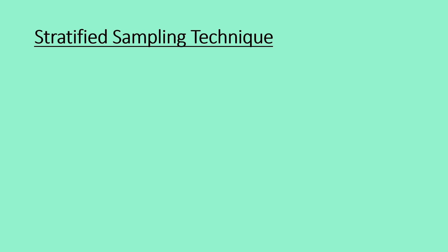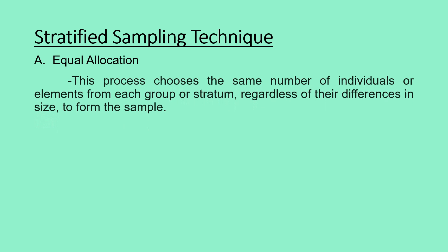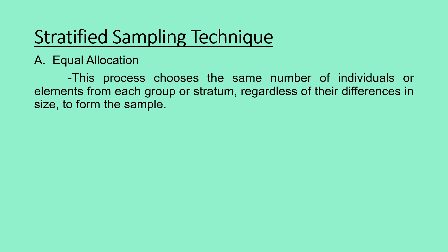Let us now proceed with the detailed procedures on how to conduct stratified sampling technique. There are two types of allocations to consider. The first one is equal allocation. This process chooses the same number of individuals or elements from each group or stratum, regardless of their differences in size, to form the sample. For example, if you need 100 respondents and you have 5 strata, divide the sample size by the number of strata, giving you 20 individuals per stratum.